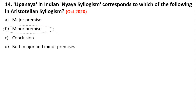In a syllogism, I have taught you about Upanaya and Nigamana. The middle line is the minor premise. B is the answer here.